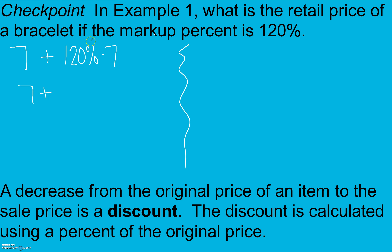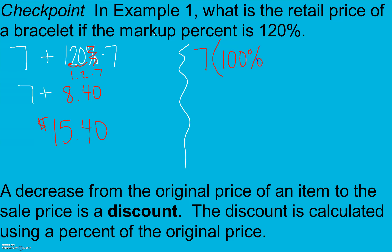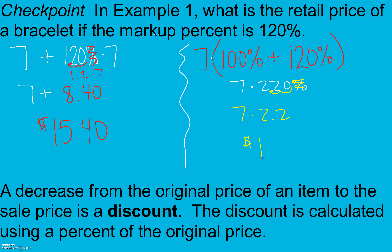When we multiply, we first have to get rid of the percent sign by moving the decimal two places, and we get eight dollars and forty cents. Combine those and we get fifteen dollars and forty cents. Or we can think of the dollar amount spent — we pay 100 percent of that, plus an extra 120 percent so they can make profit. Adding them gives 220 percent times seven. Moving the decimal two spots, 7 times 2.2 also gives us $15.40.